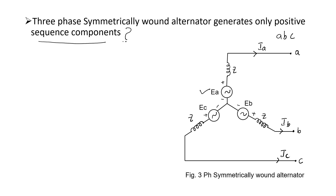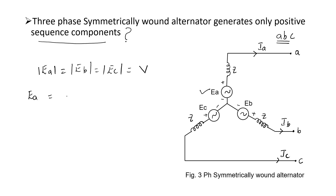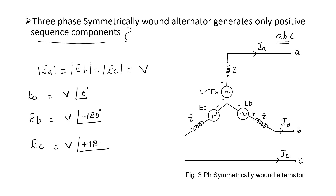Is this statement true? Let us check whether this statement is true or not. We assume the system is perfectly balanced with ABC sequence. So EA equals V at angle zero degrees, EB equals V at angle minus 120 degrees, and EC equals V at angle minus 240 degrees.